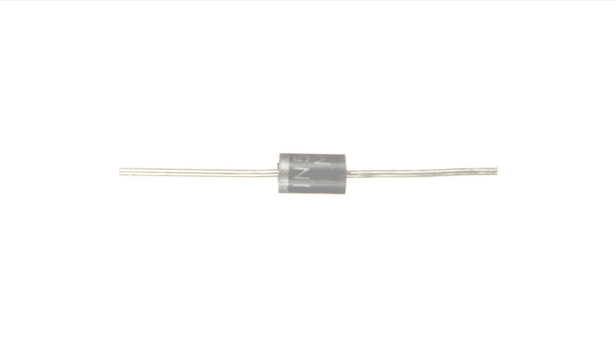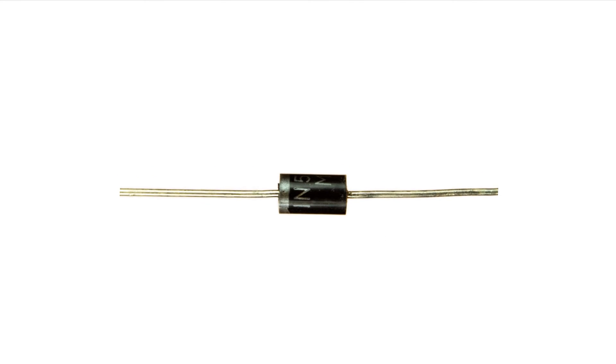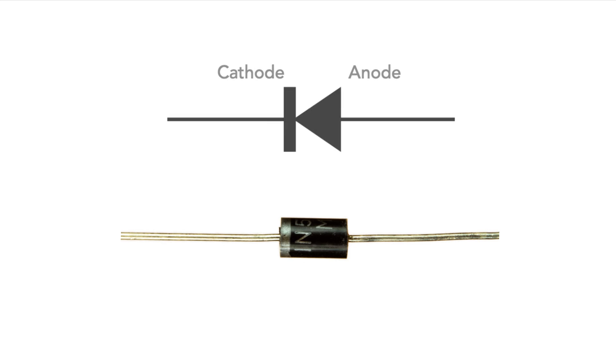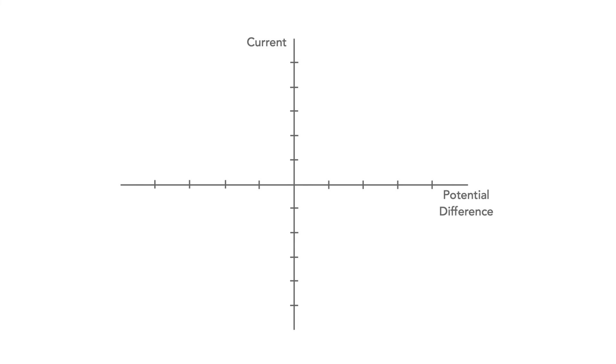There are many other devices that are non-Ohmic. Another common one is the semiconductor diode. These components are used in many forms of electrical and electronic circuit. If the voltage and current for a semiconductor diode like the one shown is measured, we see that it has a characteristic like this.